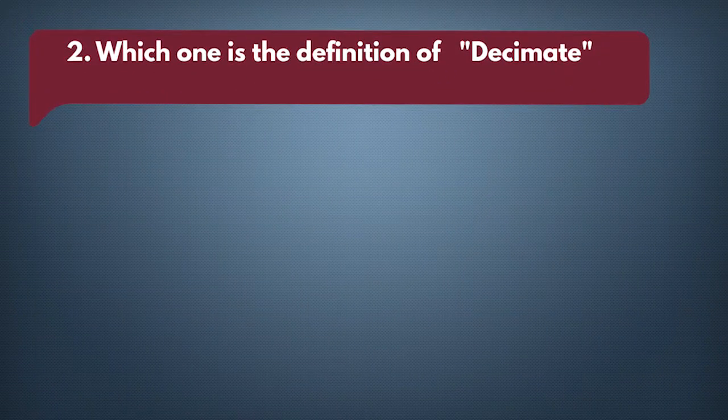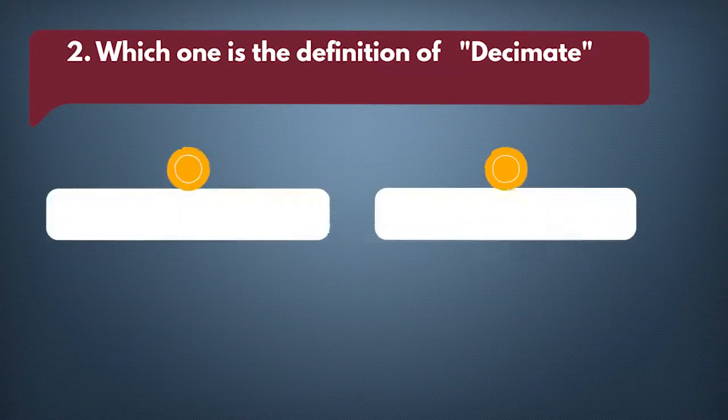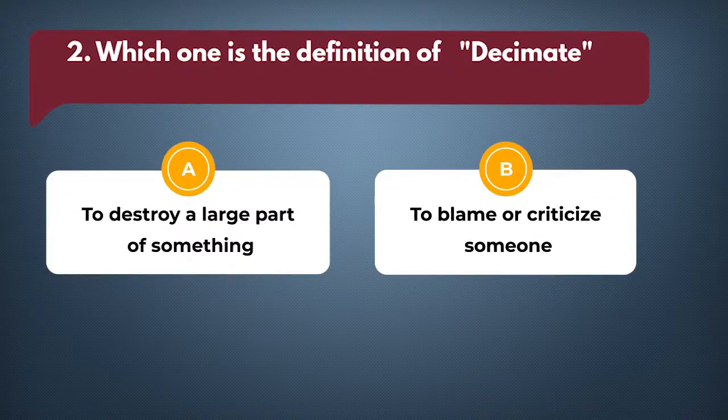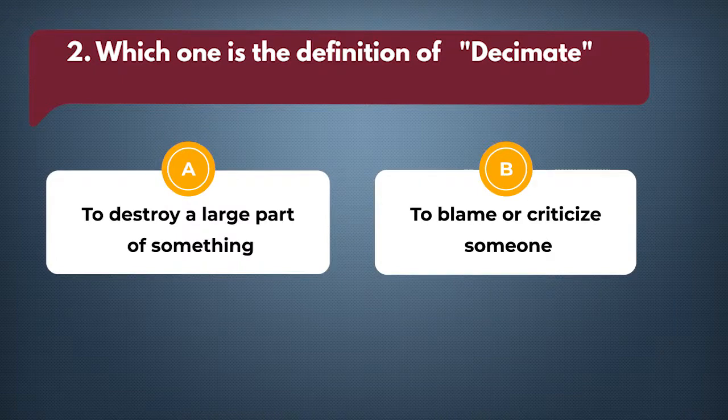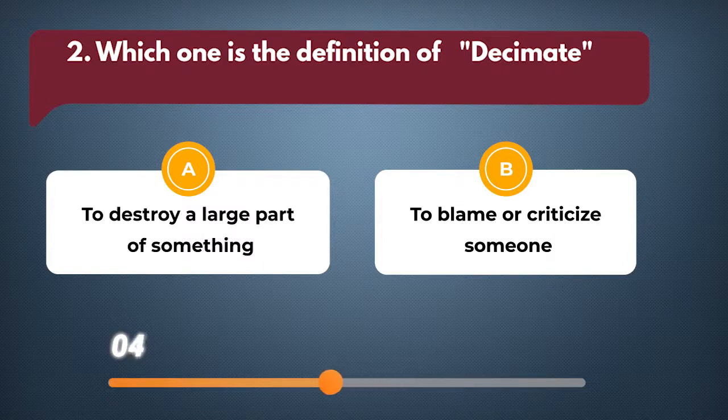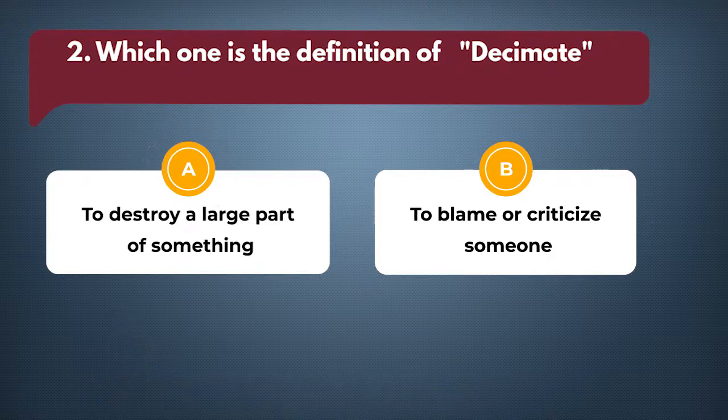Which one is the definition of decimate? A: To destroy a large part of something. B: To blame or criticize someone. The answer is A: To destroy a large part of something.